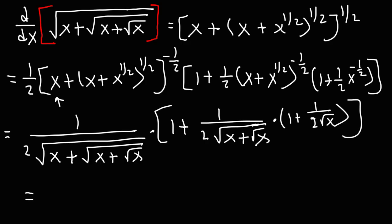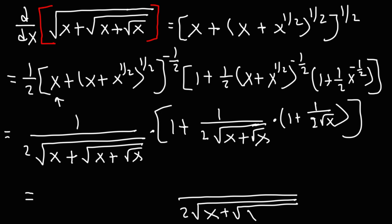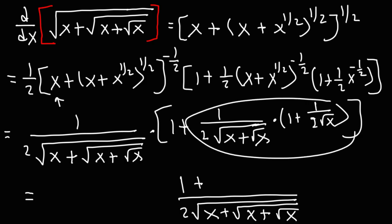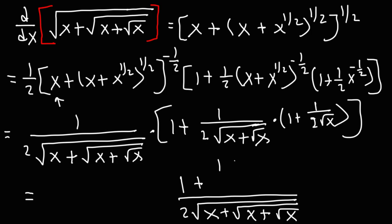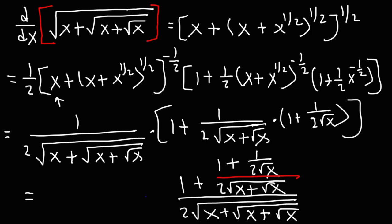We can write the final answer like this. On the bottom we have two times the square root of x plus the square root of x plus root x. On top we're going to have one plus one over two square root of x, divided by two square root of x plus square root of x. This is the final answer — the derivative of this expression. I'm not going to simplify it any further. Now you know how to find the derivative of this function using the chain rule.